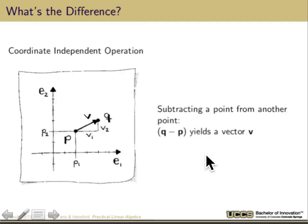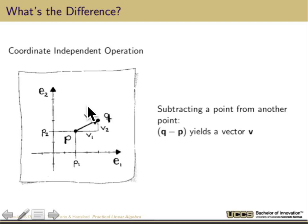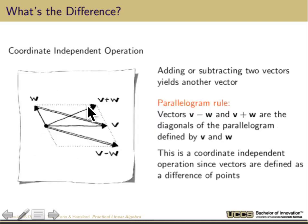Let's look at some basic operations. Subtracting one point from another — P minus Q — yields a vector V. That is coordinate-independent: no matter how I change E1 or E2, I will get a vector V when I subtract P and Q. If I were to change the scale, the scale of the vector would change, but it would still be approximately independent of the actual definition of the coordinate system.